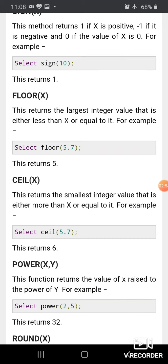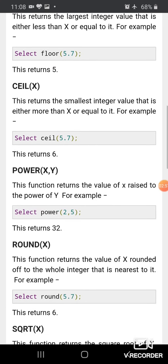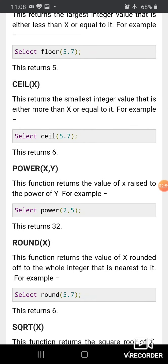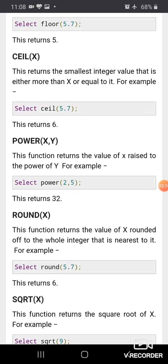POWER(X,Y) returns the value of X raised to the power Y. So SELECT POWER(2,5) gives us 2 raised to the power 5, which is equal to 32.